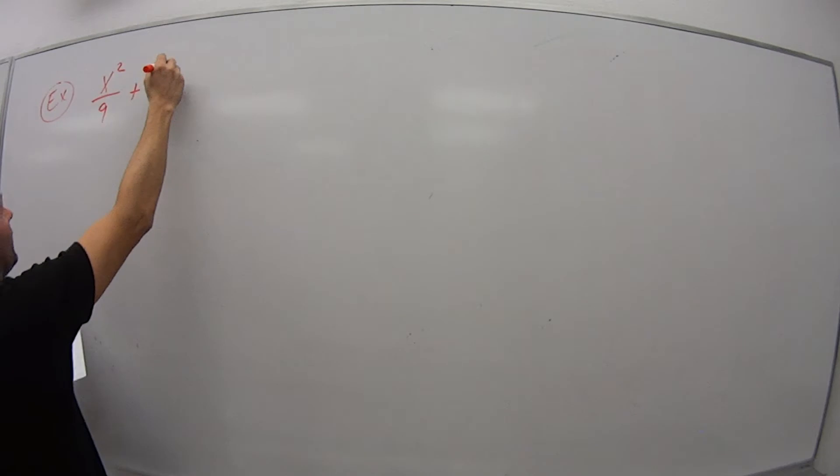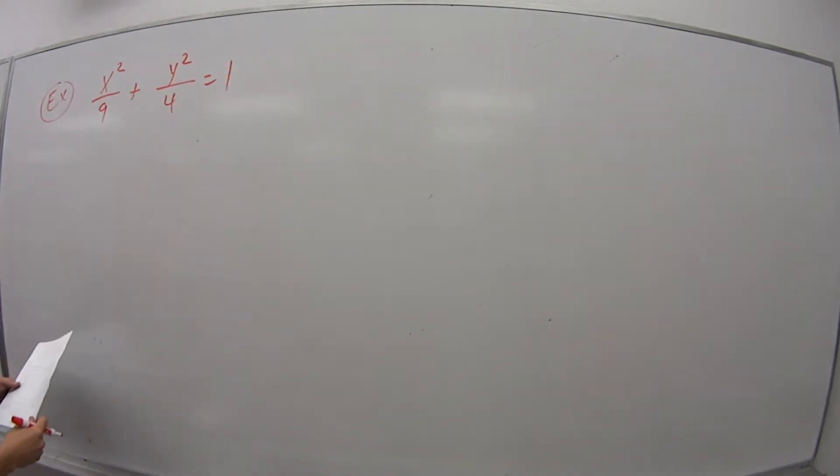We have the equation x squared over 9 plus y squared over 4 equals 1. So we want to find the following.